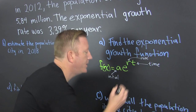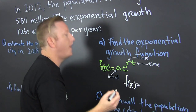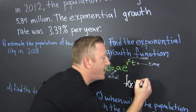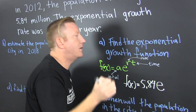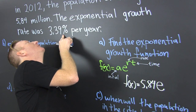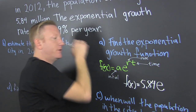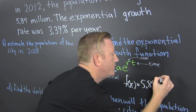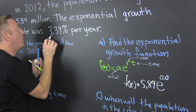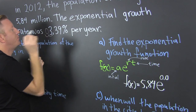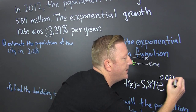So we find that our f(x) — what was our initial population? It was 5.84 million. And then that's e to the r. Now, the growth rate was 3.39%. How do you write that as a decimal? Move it over two places, so we get 0.0339. So then I write 0.0339.